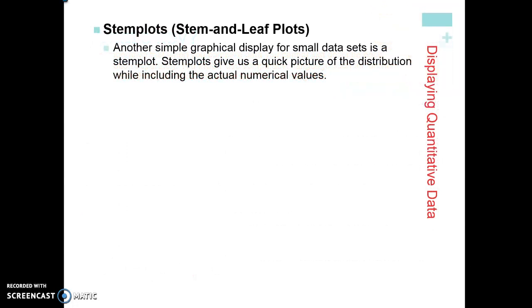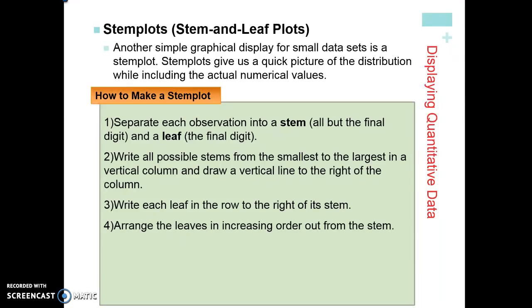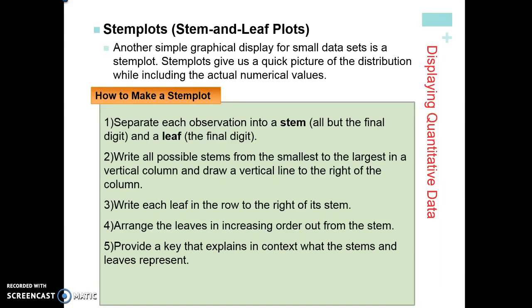Another way that you'll see data displayed is through a stem-and-leaf plot. What they do is they just give us a quick picture of a distribution. The nice thing about a stem plot is that it shows us the actual data numerical values. You have to separate each observation into a stem and a leaf. So the stem is your initial digit, the leaf is the final digit. Write all possible stems from the smallest to the largest, so you're ordering them down in a vertical column and draw a vertical line to the right of the column. Then write each leaf in a row next to the stem. Arrange the leaves in increasing order out from the stem. The most important thing is to make sure you provide a key that explains in context what the stem and leaves represent.